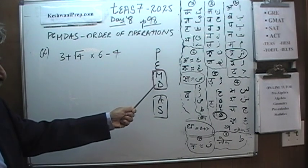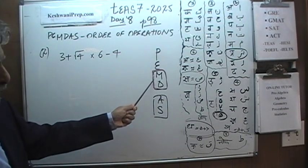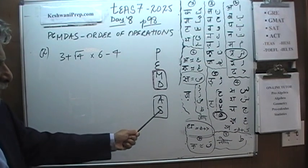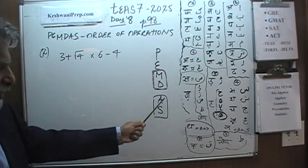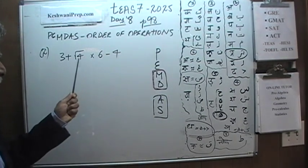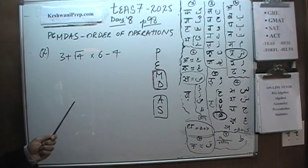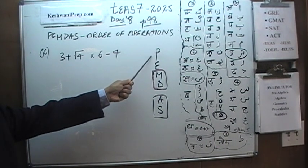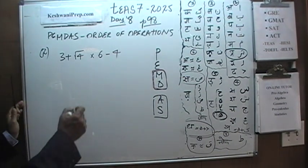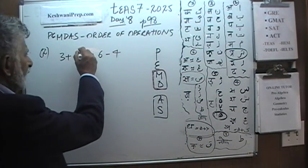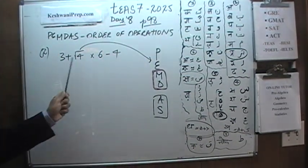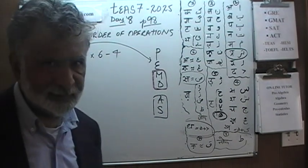The order is: parentheses, exponents, then multiplication and division — they have the same priority, so we move from left to right, whichever appears first. Then we do addition and subtraction, which also have the same priority — whichever appears first moving left to right. Do we have any parentheses here? No. Do we have any exponents? Yes — the root sign is considered an exponent, so we have to take care of that first.